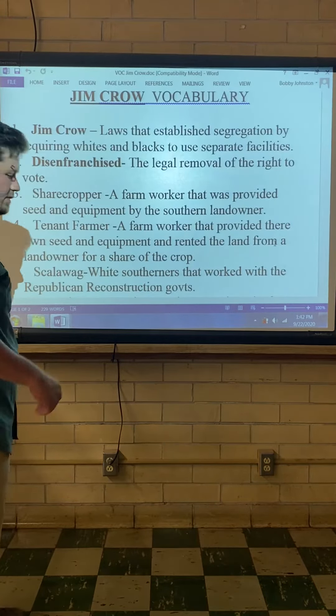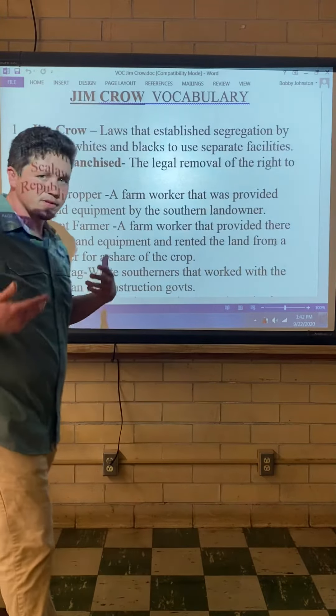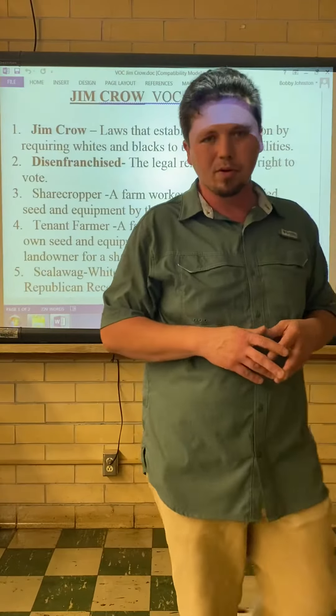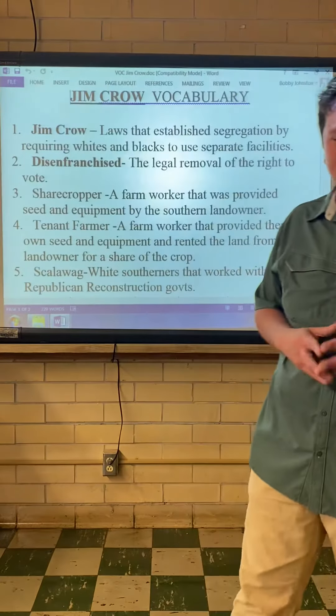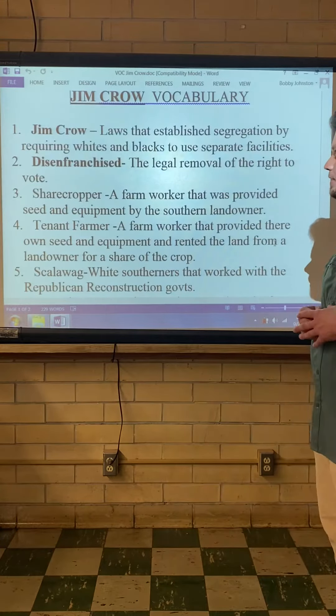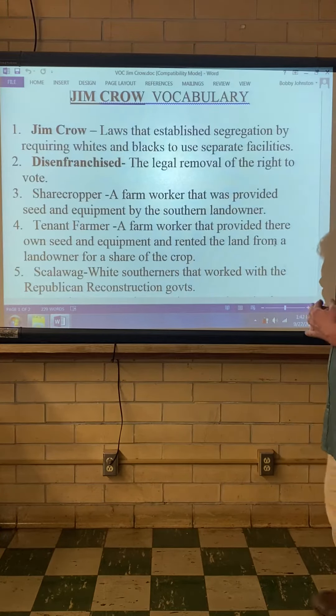This is going to be the new chapter. The second chapter of the year is called Jim Crow, and we're going to start off with the first five vocabulary words. Jim Crow are laws that establish segregation by requiring whites and blacks to use separate facilities.